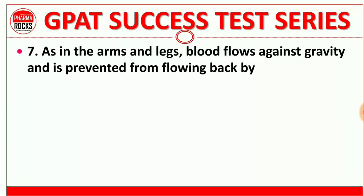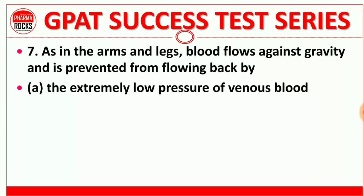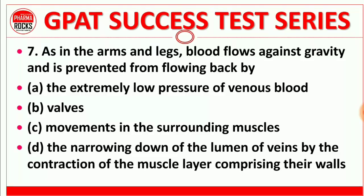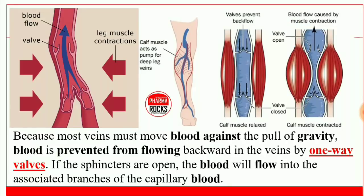Question number 7: In the arms and legs, blood flow adjusts against gravity and is prevented from flowing back by the extremely low pressure of venous blood — due to valves, movement in surrounding muscles, or narrowing of the lumen of the vein by muscle contraction? The right answer is valves. Veins must move blood against the pull of gravity; blood is prevented from flowing backward by one-way valves.